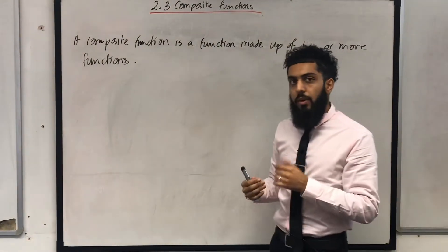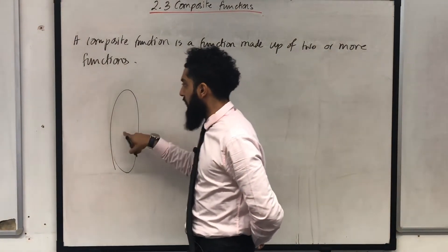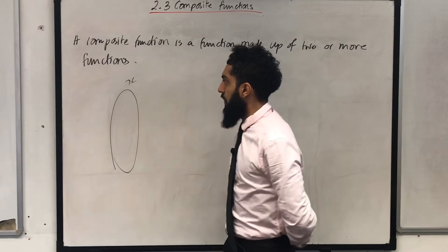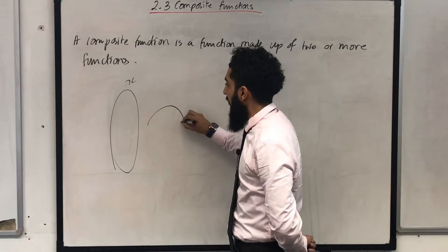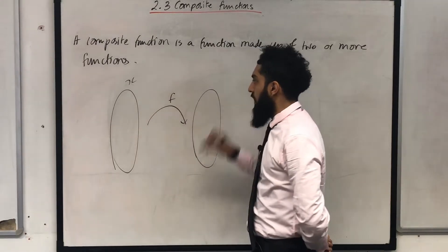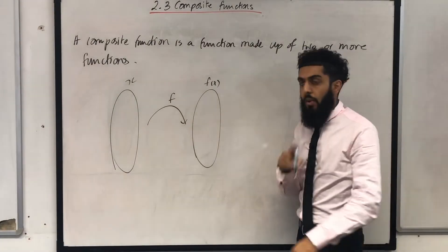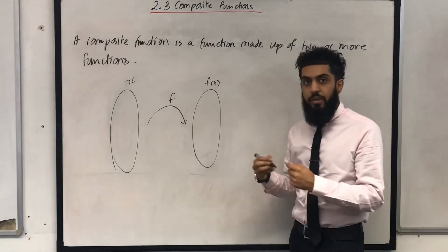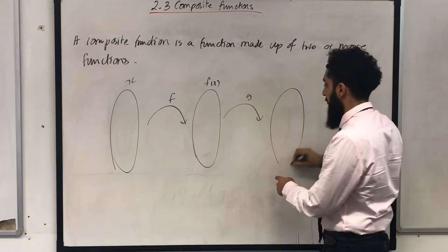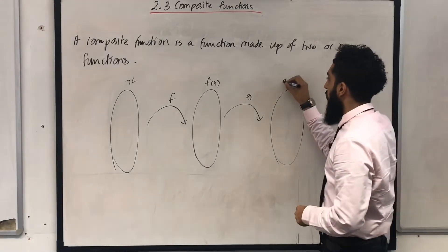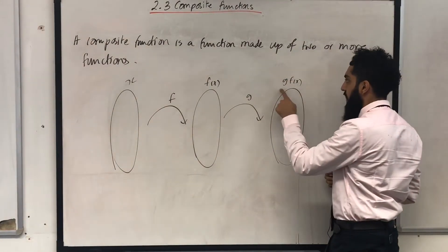What I'm going to do now is draw a mapping diagram. I've got a set of x values. I'm going to transform this set of x values under the transformation f to obtain another set, and this set is the set of f(x) values. I'm going to take the set of f(x) values and transform it under the transformation g to obtain another set, and this set is the set of g(f(x)) values. Have a look at this particular notation very carefully.